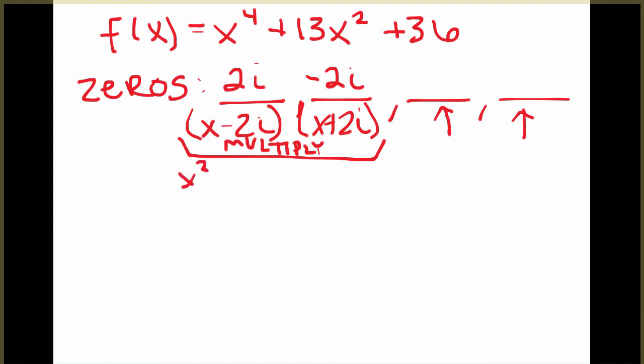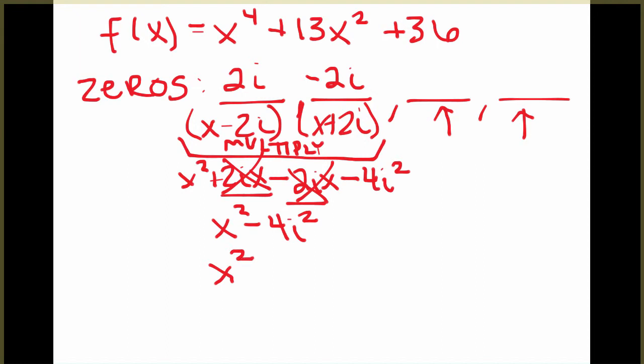So if we multiply there, we will get x squared plus 2ix minus 2ix minus 4i squared. So if you look here, the two ix's will cancel out. We're left with x squared minus 4i squared. But if you think back to when we talked about complex and imaginary numbers, i squared is equal to negative 1. And so this becomes x squared plus 4.